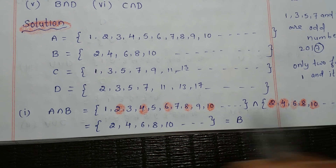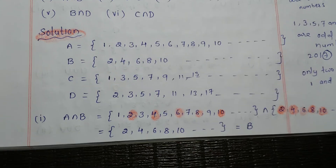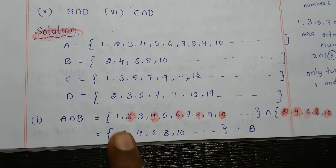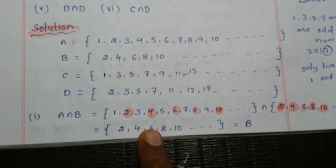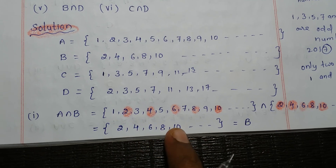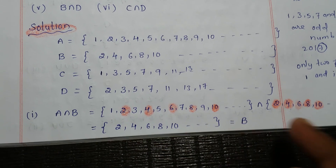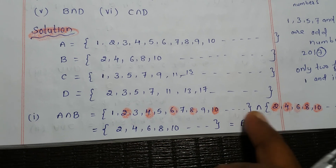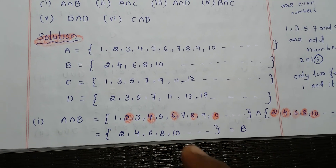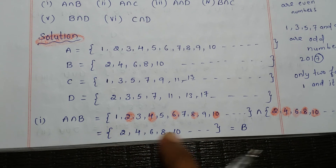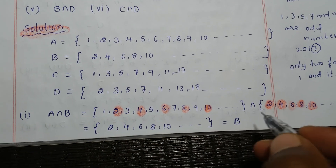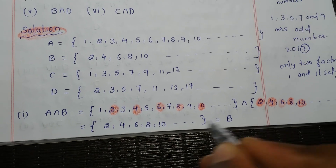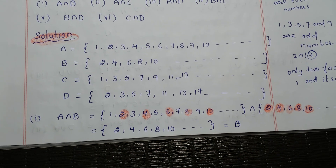The common elements we are getting are 2, 4, 6, 8, 10, and so on — that is nothing but set B itself. Intersection means we have to write only the common elements from both sets.